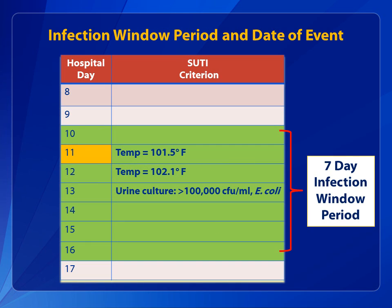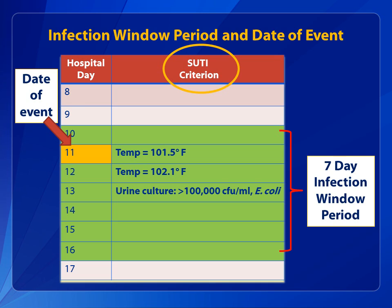Now, let's apply this information. The symptomatic urinary tract infection, or SUTI, definition is met. Hospital day 11 is the SUTI date of event. This is the date the first element used to meet the site-specific infection criterion occurs for the first time within the seven-day infection window period.